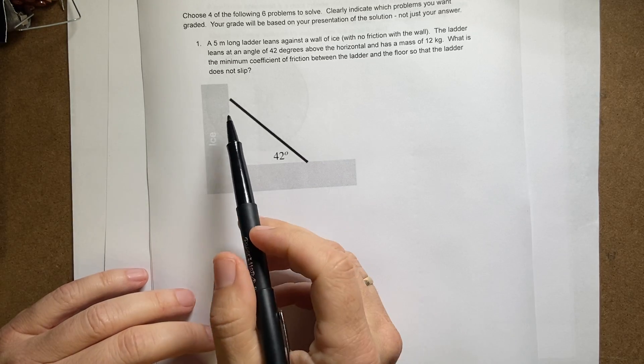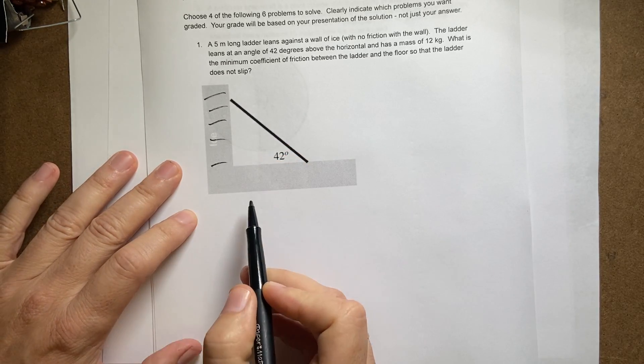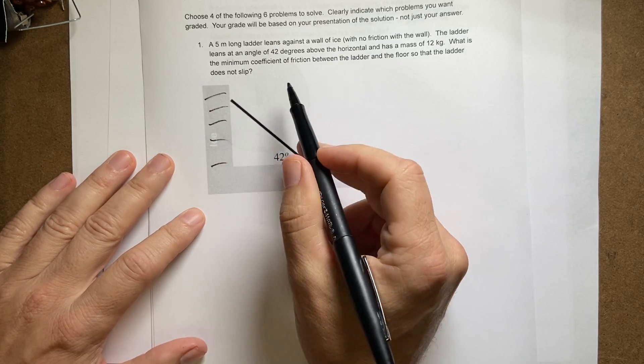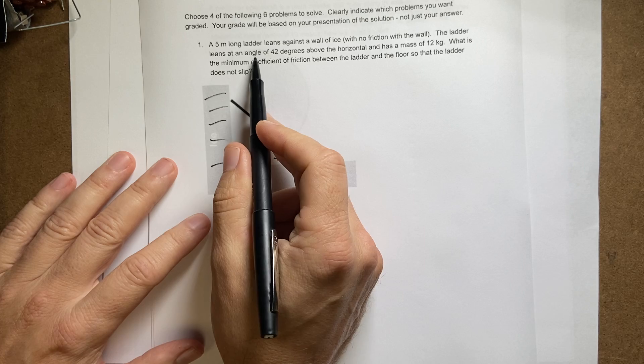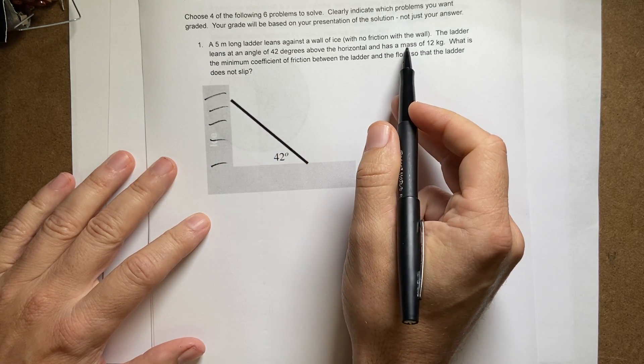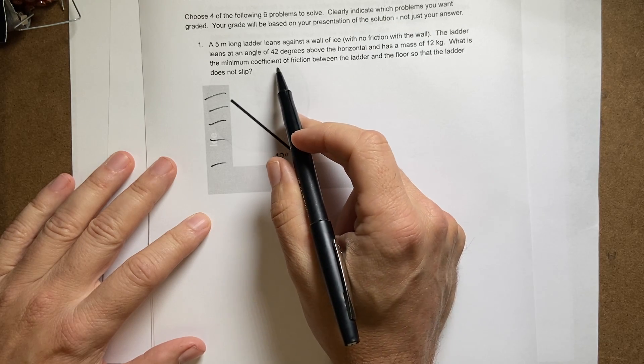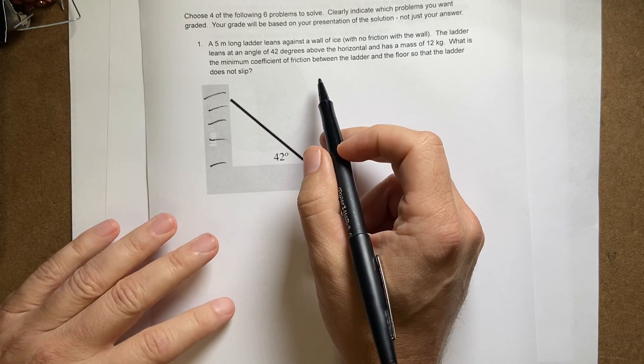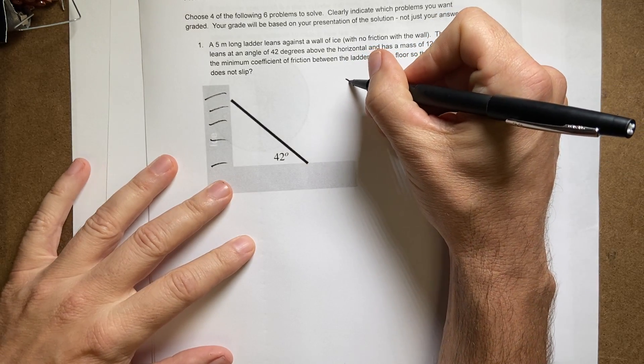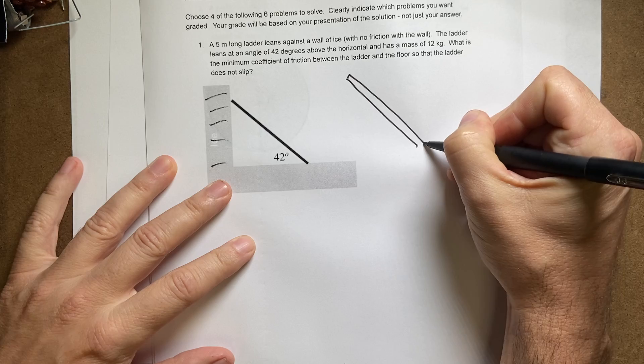So here is a ladder. This is ice. And so I have a 5 meter long ladder against a wall of ice. There's no friction up here. That makes it a little bit easier. And it leans at a 42 degree angle above the horizontal with a mass of 12 kilograms. What's the minimum coefficient of friction so that it doesn't slip?